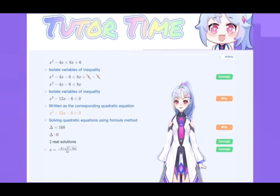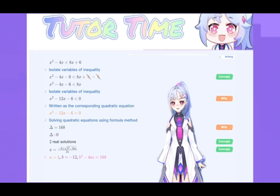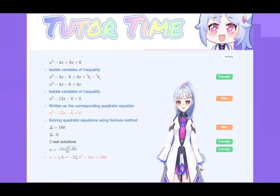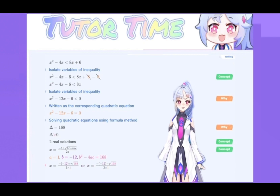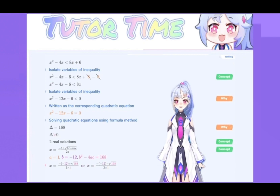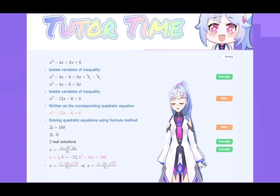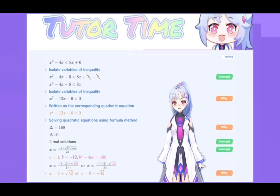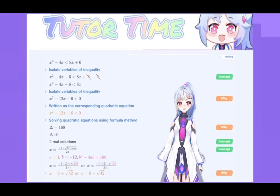So we can use the quadratic formula to calculate x. Write the quadratic formula. We already know the value of a, b, and b squared minus 4ac. Substitute these values into the quadratic formula, we can get this equation. Simplify. Then we can get this equation.